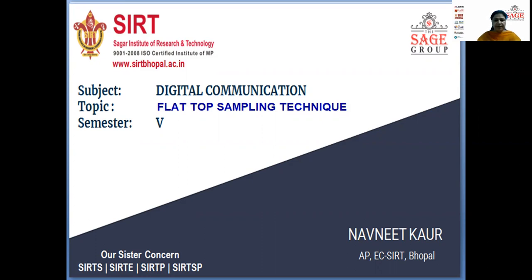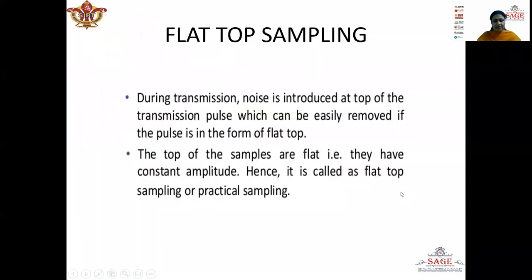In my previous lectures, I have already discussed the concept of sampling and the type of sampling which is natural sampling. We already know that sampling is done to convert a continuous time signal into a discrete time signal. There are two types of sampling techniques: the first is natural sampling, which we have already covered, and the second technique is flat top sampling.